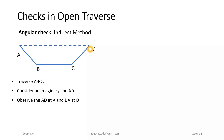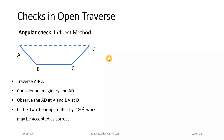Now, if the difference between the bearing angle at A and D is 180 degrees — a difference of 180 degree — we can say that our work may be correct. Otherwise, there will be an error.